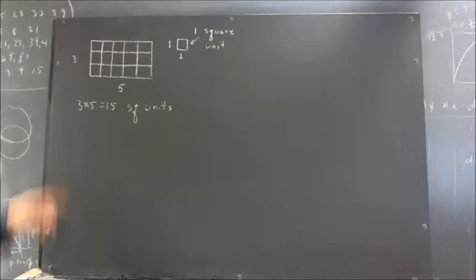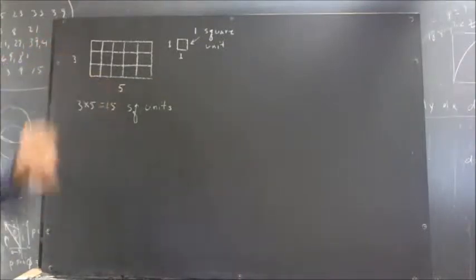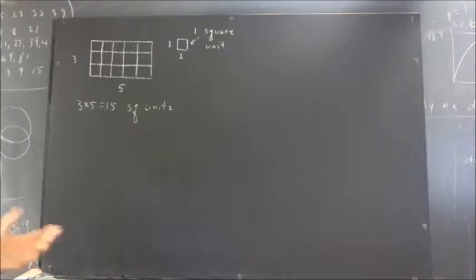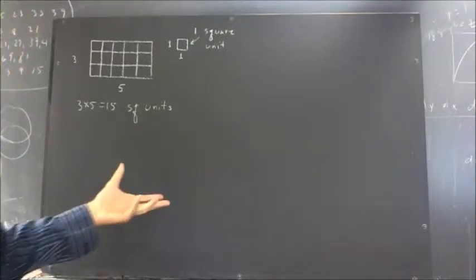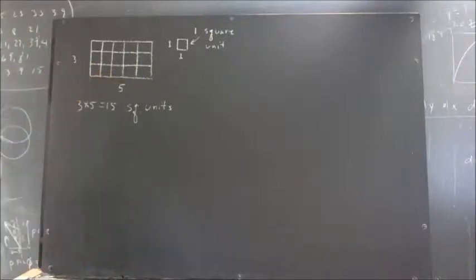Now, this works fine as long as we have a whole number of units on each side. If we have a fractional number of units on each side, or even worse, if we have two sides whose lengths are, or at least one side, whose length is an irrational number, how can we do this?